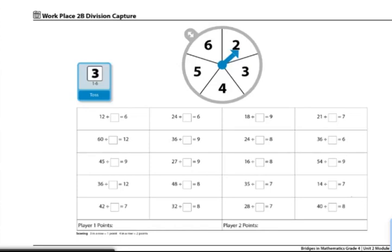These are the directions for Workplace 2B Division Capture. The materials you'll need to play this game would be one 2B Division Capture record sheet for both partners to share, one spinner overlay, and one red as well as one blue colored pencil.